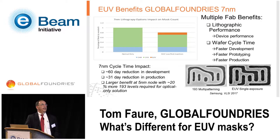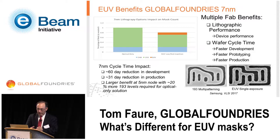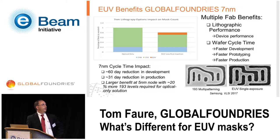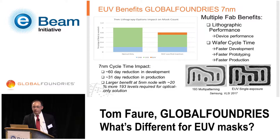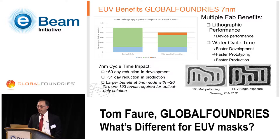We should start with what are the benefits of EUV, looking at it from a GlobalFoundries perspective with a focus on 7 nanometer. There are multiple fab benefits in the form of lithographic performance, which results in improved device performance — shown in slides presented by Samsung and VLSI comparing multi-patterning results on wafer versus EUV single exposure. The other key benefit is wafer cycle time in the fab, which enables faster development, faster prototyping, and faster production. At 7 nanometer, you can get up to a 60-day reduction in development.